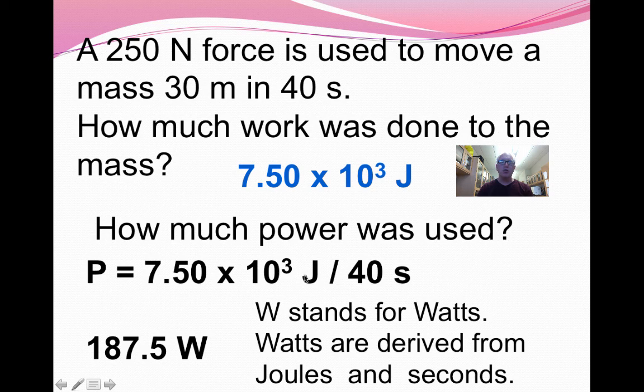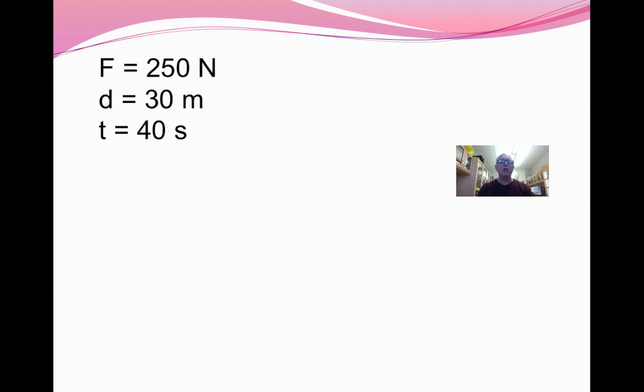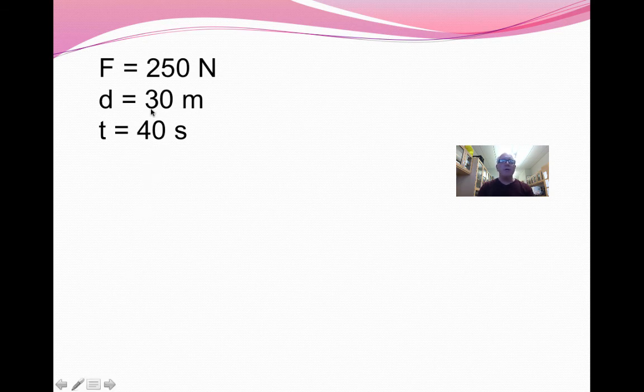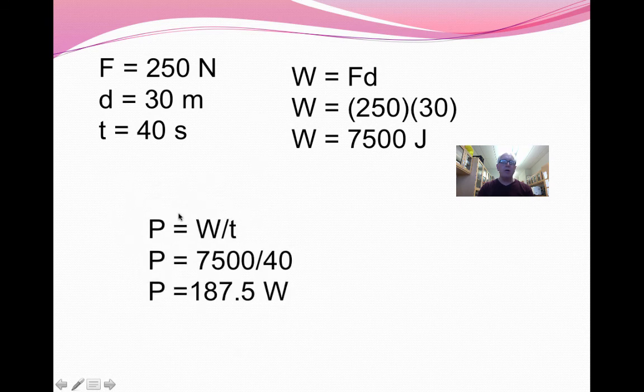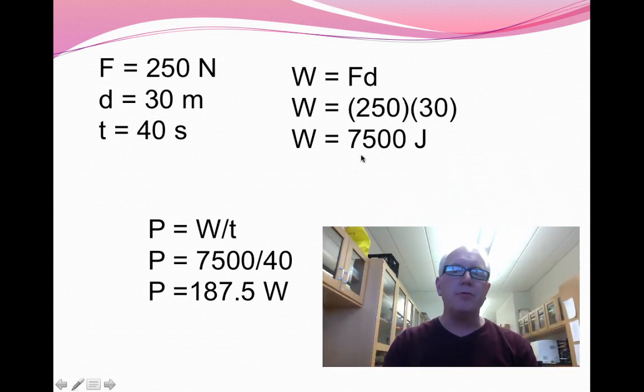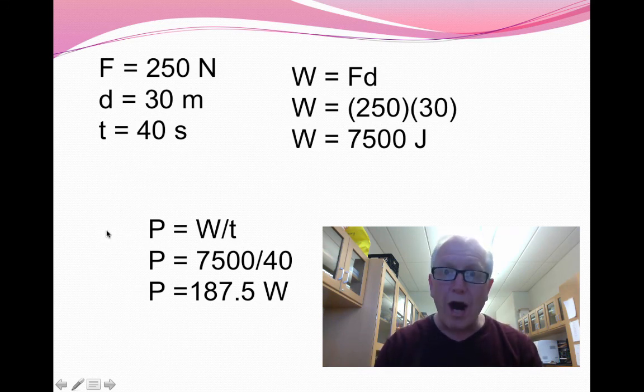Watts are derived from joules and seconds. Joules divided by seconds gives you watts. Once we're back to relying on the joule to get the derived unit of watt, and the joule was derived from newtons, and that comes back to kilograms, meters, and seconds. Everything's wrapped up in the kilograms, meters, and seconds. Here's my solution for that. Here I've identified the information that I was given, and I found the work by multiplying the force by the distance. That's where I got the 7,500, or 7.5 times 10 to the third joules. Here is the power calculation. Power is the work divided by the time. 187.5 watts is the answer.